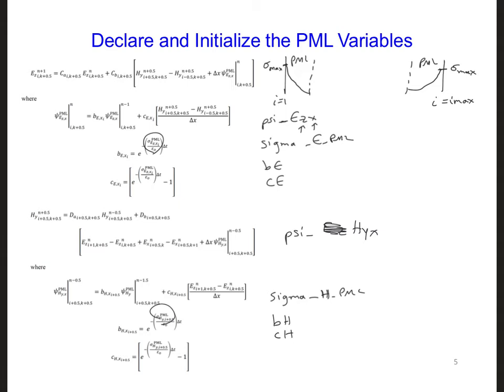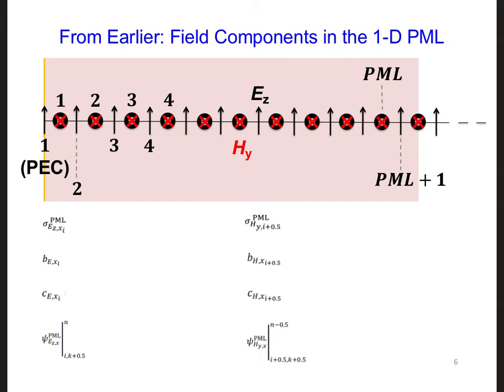Including z and x isn't critical in our two-dimensional code here because we're only implementing a PML on one side of the grid. But those subscripts would be more important if we were implementing PML on the other sides of the grid as well. Since we've already implemented a PML in one dimension, let's make things easier for ourselves and define the PML to have the same thickness as before and to be on the same number of field components from the edge of the grid.